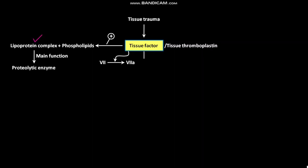In the next step, tissue factor in combination with activated factor VII acts enzymatically on a biochemical reaction in which factor X is converted into activated factor X, or Xa. This biochemical reaction occurs in the presence of calcium ions.